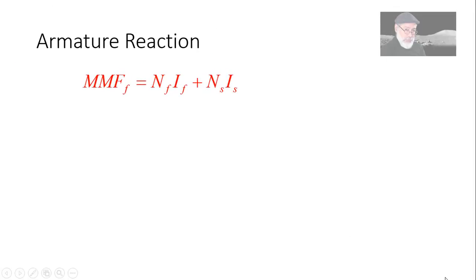So far we have said that the MMF creating the magnetic flux in the air gap of the DC machine is the combination of the MMF of the field coil, NF·IF, and the series coil MMF, NS·IS, plus or minus, depending on whether you have additive or subtractive composition.